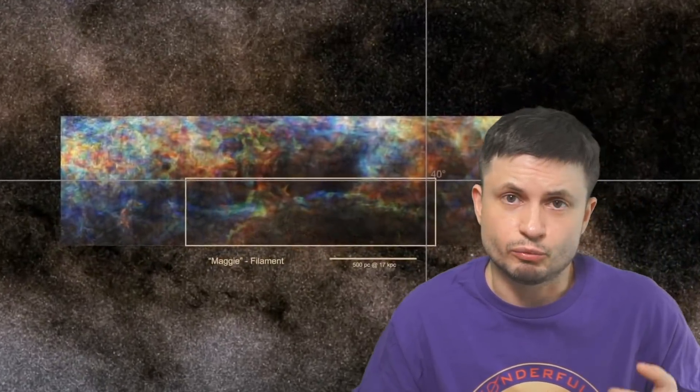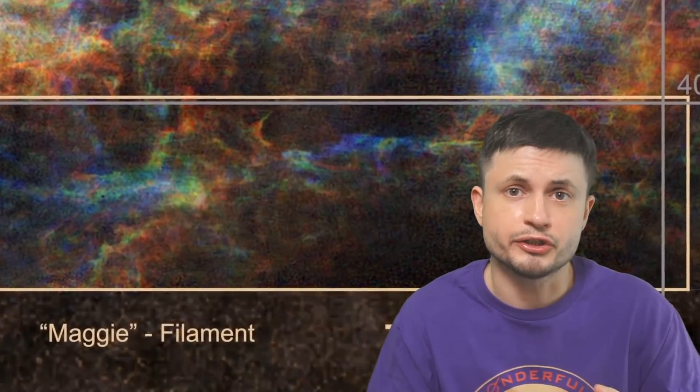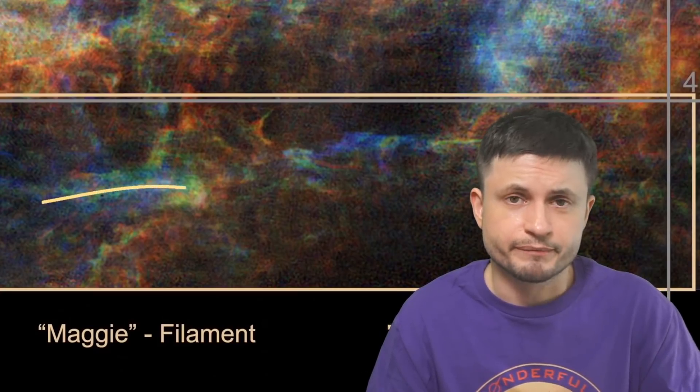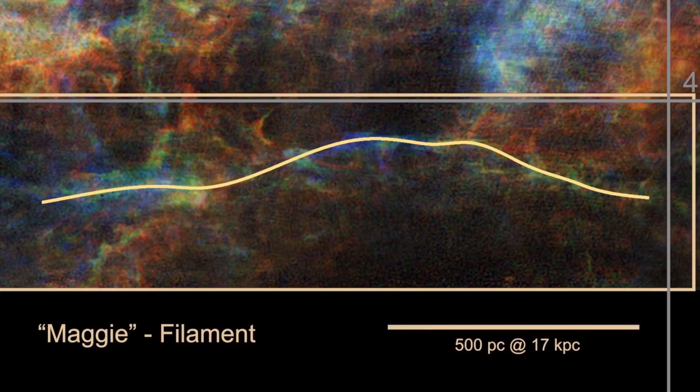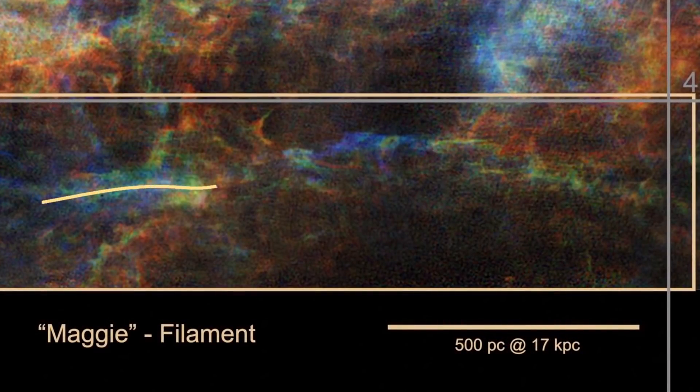So essentially MAGI, or MAGI filament, is one of the longest filaments, hydrogen filaments, discovered to date. It's also relatively far from us. It's about 55,000 light years away from us, and forms a structure that's nearly 4,000 light years in length, and approximately 130 light years in width.